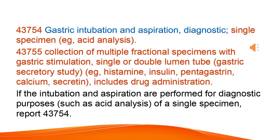Gastric intubation and aspiration, Diagnostic: single specimen (e.g., acid analysis); collection of multiple fractional specimens with gastric stimulation; single or double lumen tube. Gastric secretory study, e.g., histamine, insulin, pentagastrin, calcium, secretin — includes drug administration. If the intubation and aspiration are performed for diagnostic purposes such as acid analysis of a single specimen, report 43,754.